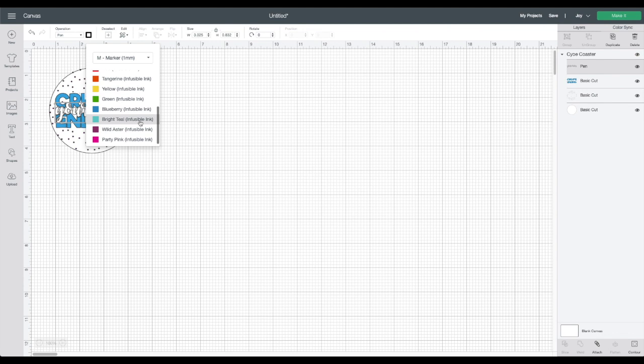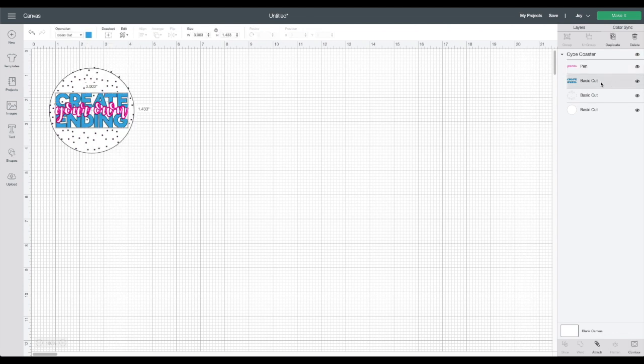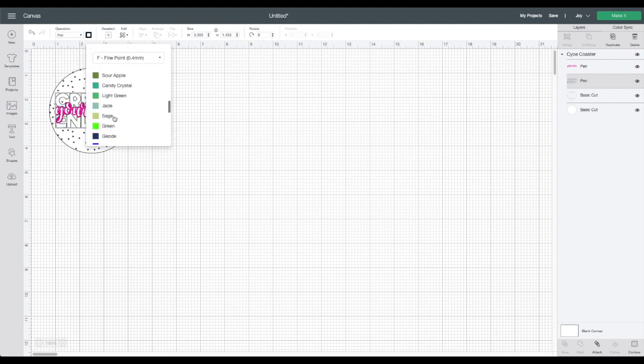I personally love to change it to the color that it is actually going to be. This one happens to be the Cricut Joy infusible ink markers that I'm selecting. The first one that I selected was party pink.